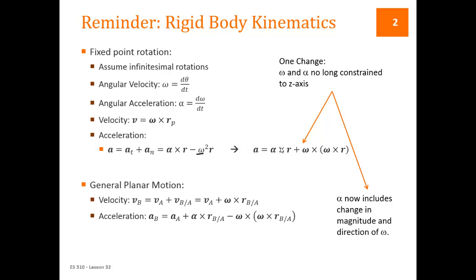Alpha therefore now includes the change in magnitude and direction of omega. In general planar motion, we have the same expression for velocities: the velocity of point B equals the velocity of point A plus the relative velocity between B and A, given by omega crossed with the position of B relative to A. The acceleration expression now incorporates the same double cross product.